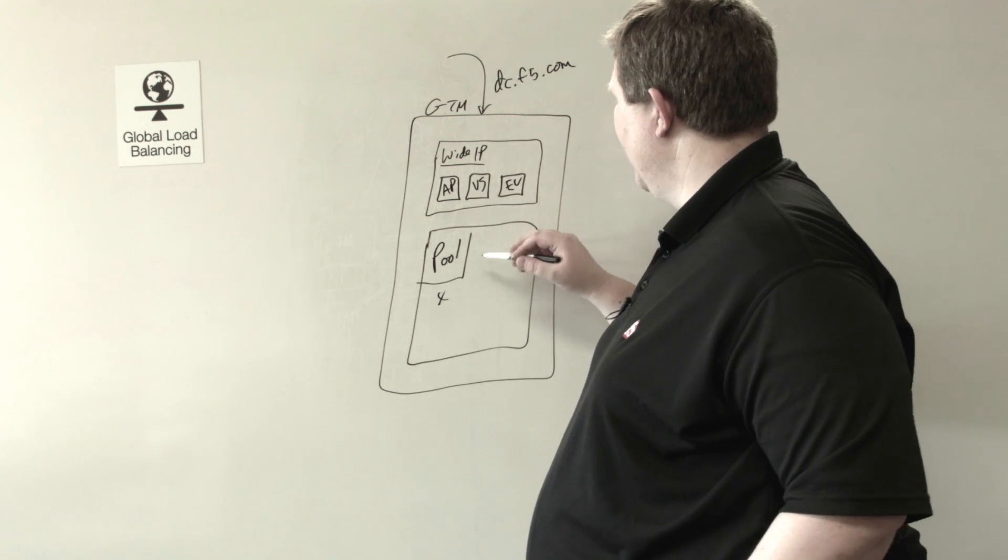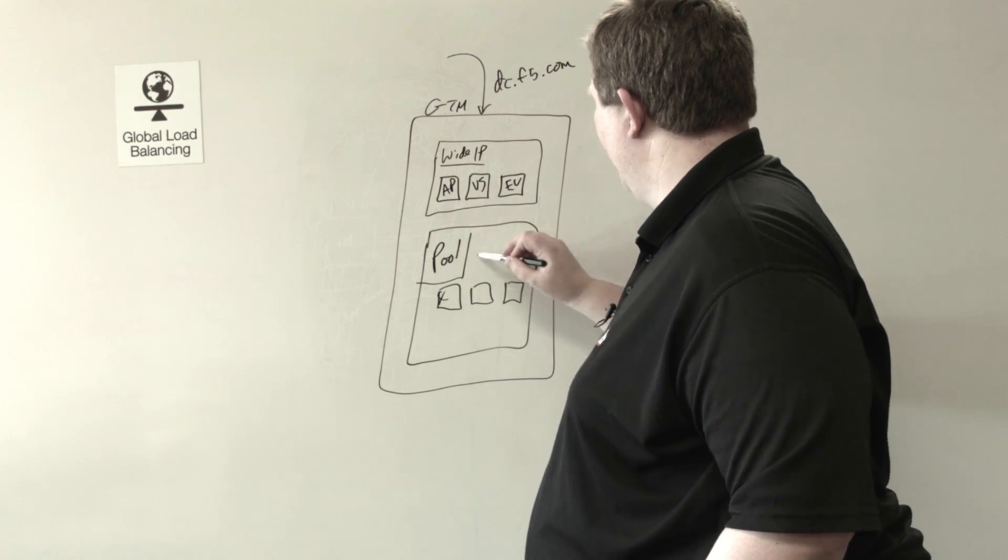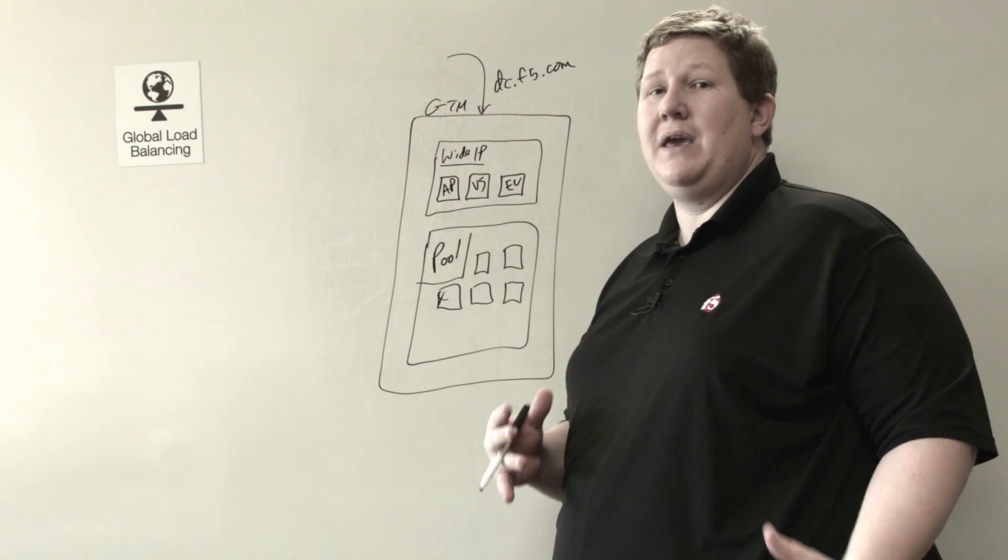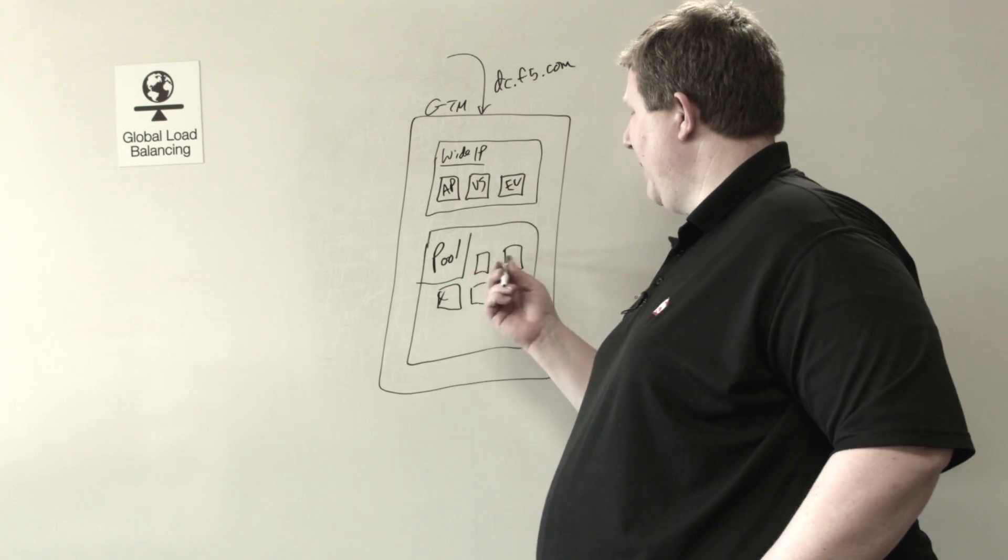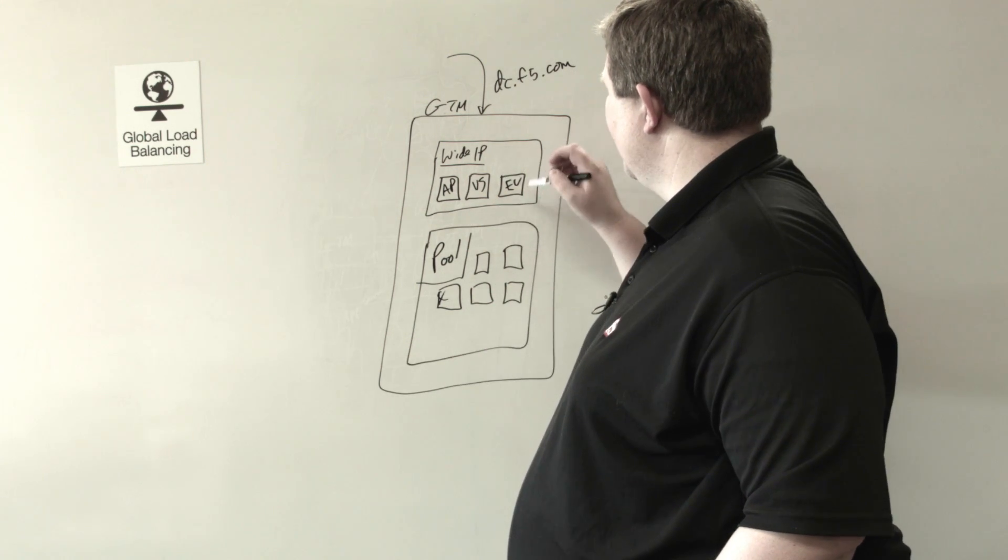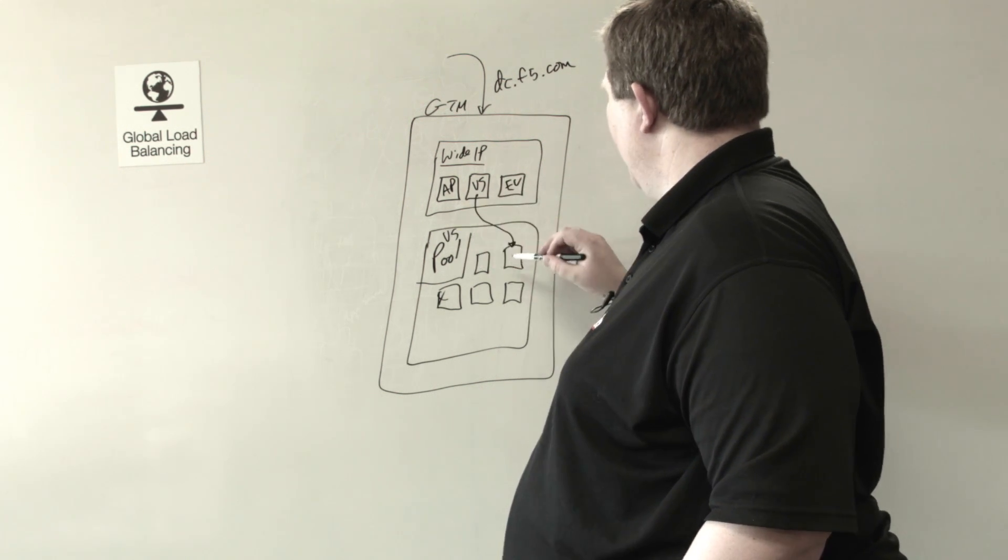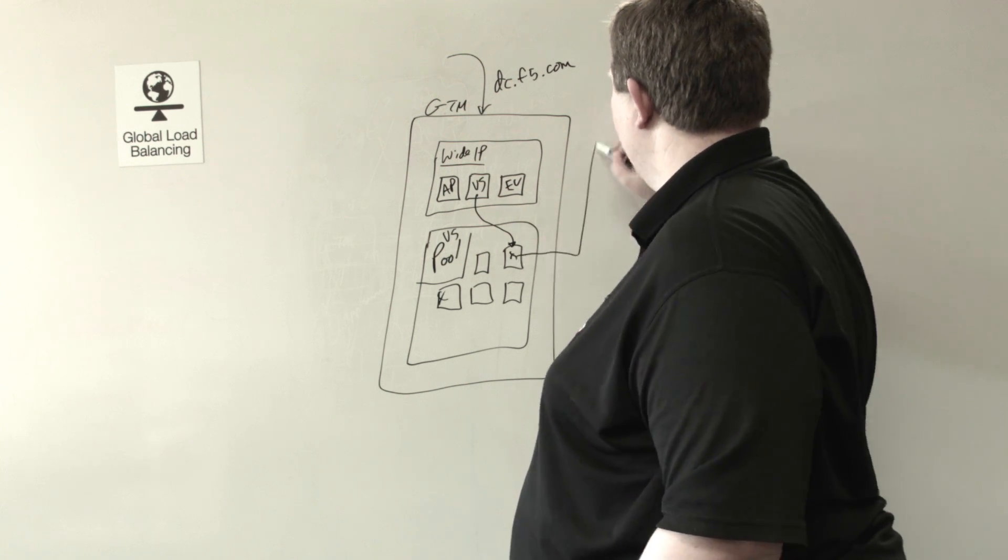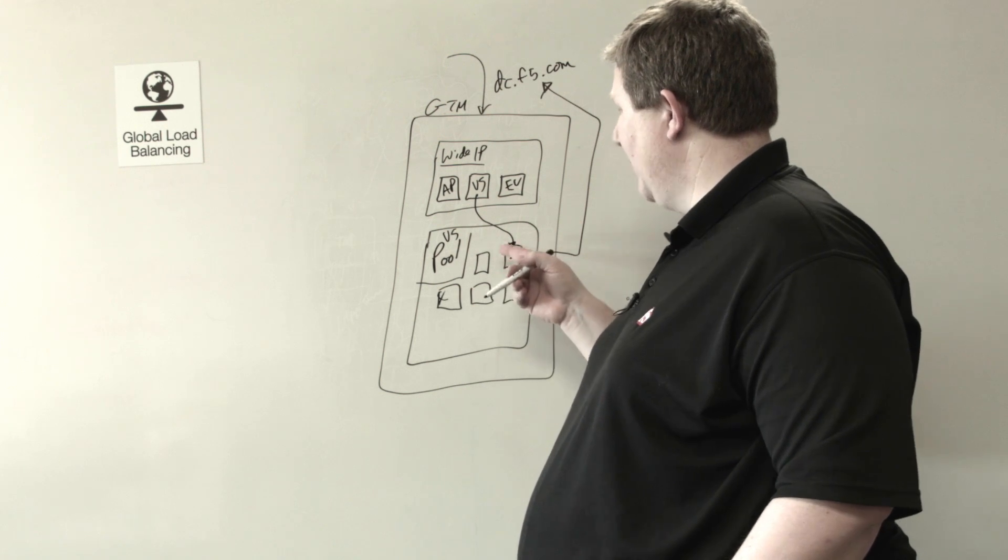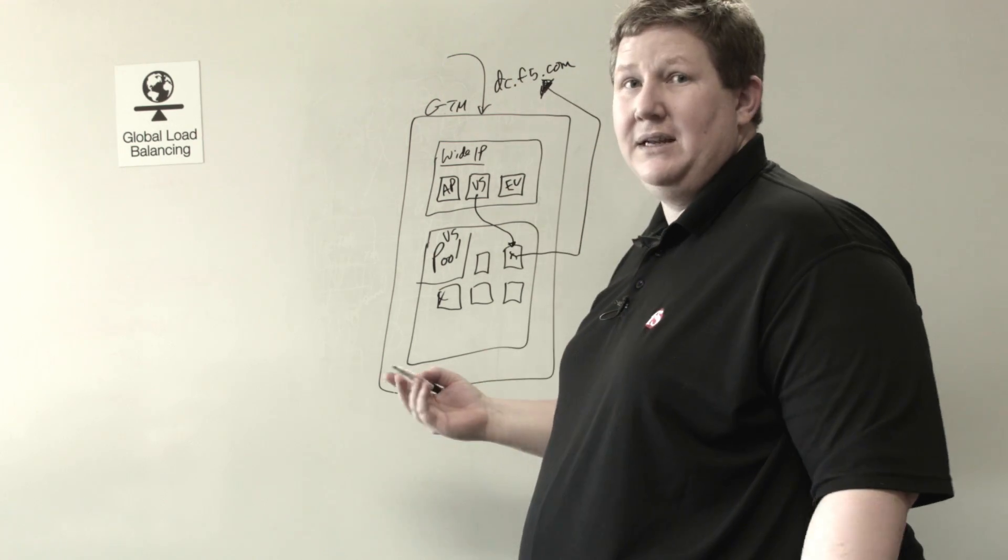And then from that pool, it's going to come down and pick a pool member. Now, the pool members in GTM, there are other options, but if you have an LTM solution in your data center, these pool members are going to be virtual servers on your LTMs. So when the decision is made here for the US, and then it comes down here and picks this pool member in the US pool, then that is the answer that's going to be given. The IP of that pool member in GTM, that's the DNS answer that's going to be given for the query dc.f5.com.